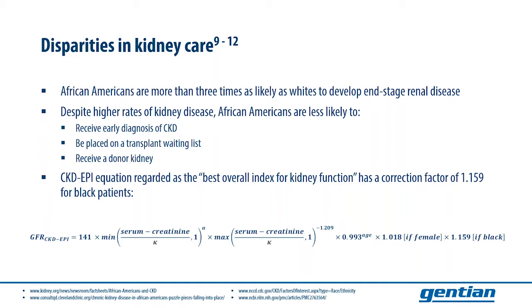The unfortunate reality faced by African Americans who are diagnosed with chronic kidney disease is that they are three times as likely as their Caucasian counterparts to develop end-stage renal disease. And the bias inherent in equations used to estimate kidney function solely based on creatinine is a significant contributor to this public health issue. The CKD-EPI equation, which is regarded as the best overall index for kidney function,